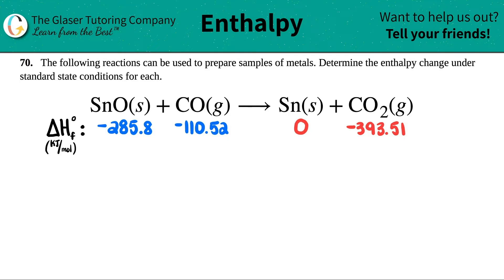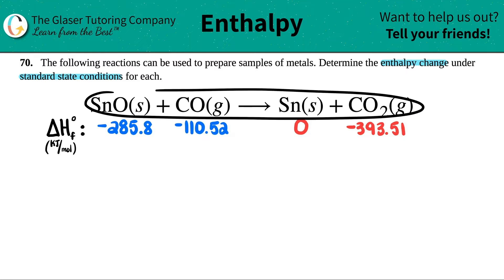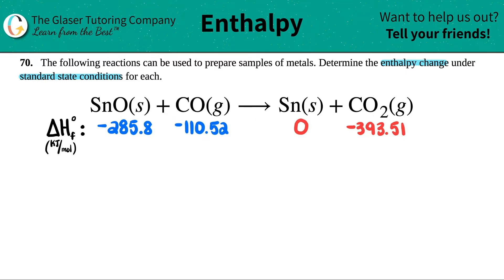Number 7D. The following reactions can be used to prepare samples of metals. Determine the enthalpy change under standard state conditions for each. We have an example right here: SnO solid plus CO gas yields Sn solid plus CO₂ gas.